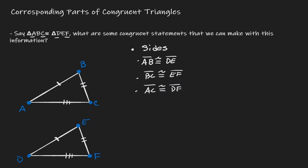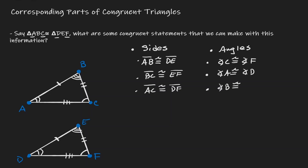But is that all we can say about these congruent triangles? If those triangles are congruent, then the angles opposite congruent sides should also be congruent. Angle C should be congruent to angle F, angle A should be congruent to angle D, and angle B should be congruent to angle E.